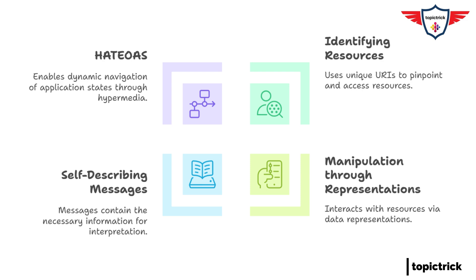Another important principle is manipulating resources through representations. So instead of directly accessing the data on the server, clients work with a representation of that data. For example, if you want to retrieve information about a customer's account, instead of directly accessing the database record, the API would provide you with a representation of that account in a format like JSON or XML. It's like getting a summary report instead of having to dig through the entire filing cabinet. The server can change how it stores data internally without affecting how clients interact with it, as long as the representation format stays the same.